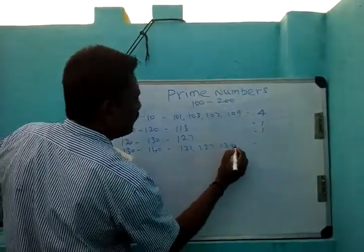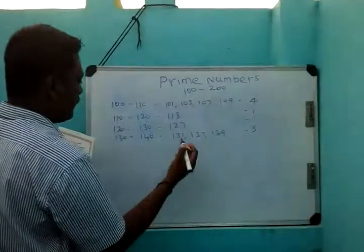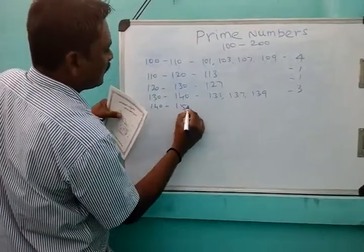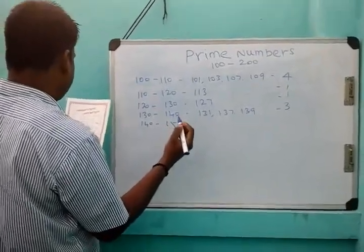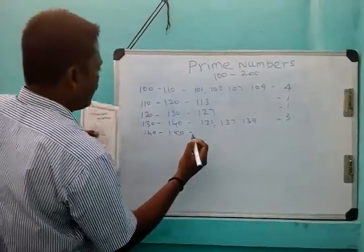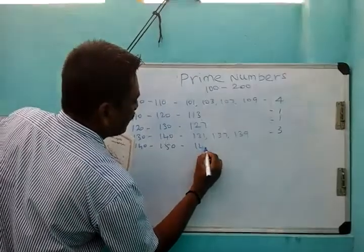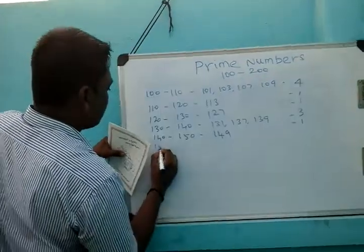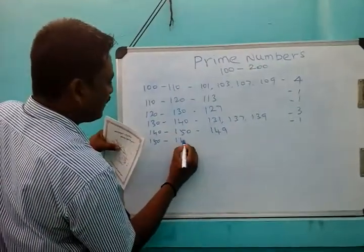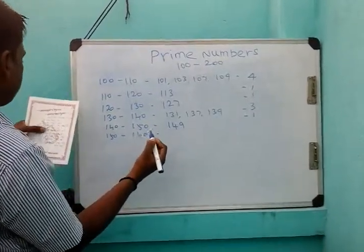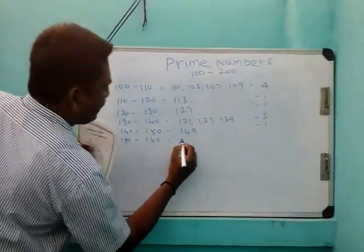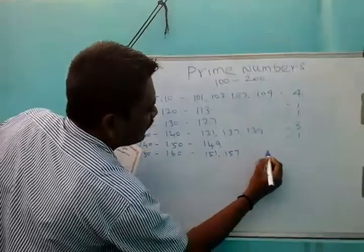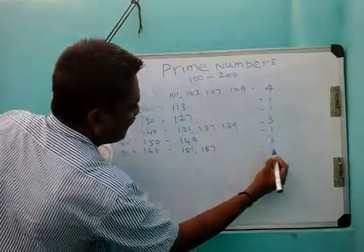139 is prime. Now from 140 to 150, we have 149 as a prime number. That is 1 prime. From 150 to 160, we have 151 and 157. With this, you have 2 prime numbers.